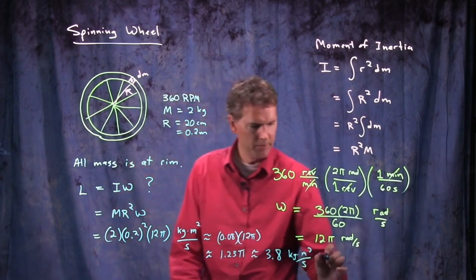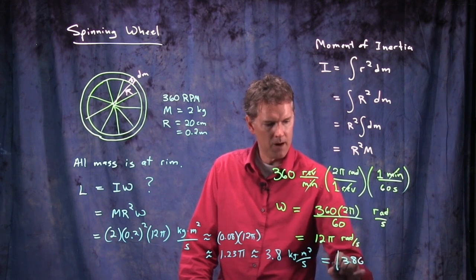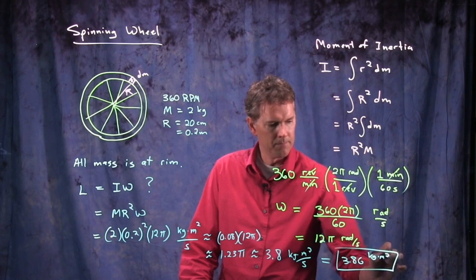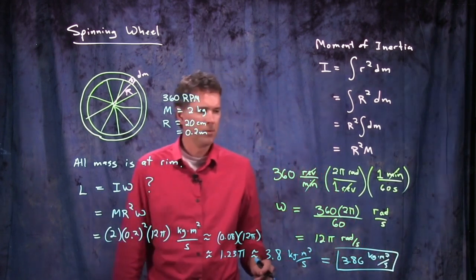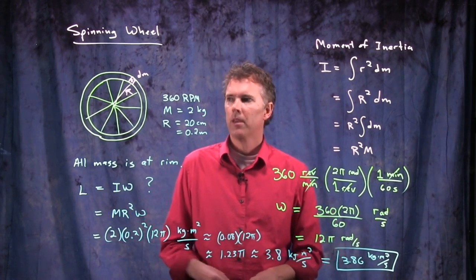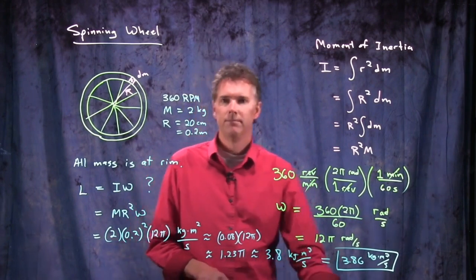3.8 kilogram meter squared per second. Eric, did you get a real answer for that one? 3.86. All right. Good. So our guess was pretty close. Kilogram meter squared per second. This would be the angular momentum of the bicycle wheel. All right. Hopefully that's clear. If not, come see me in Office Hours. Cheers.